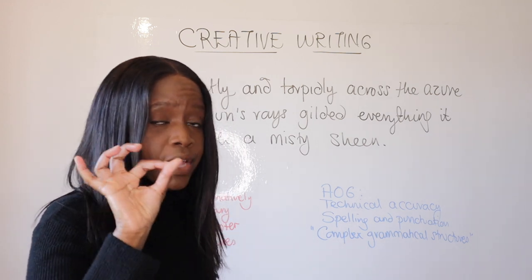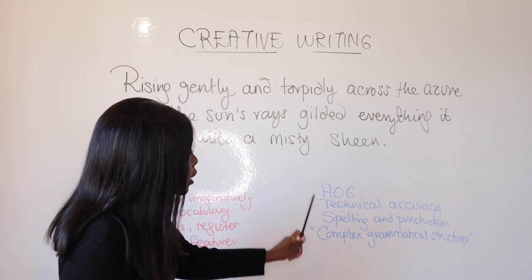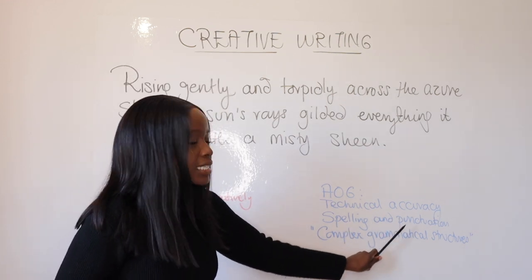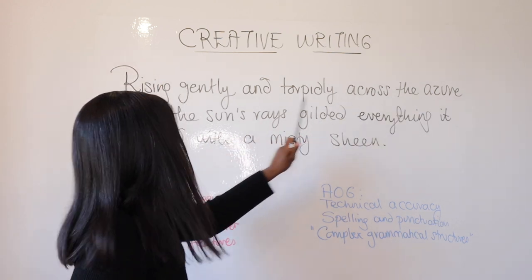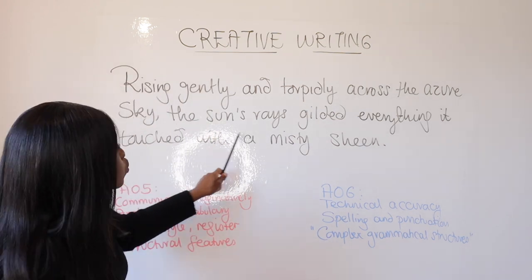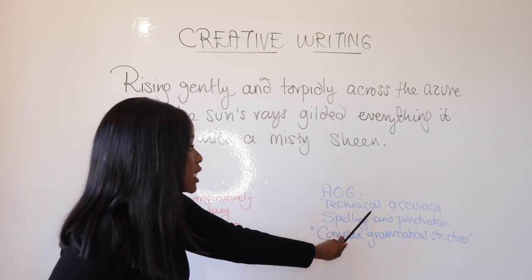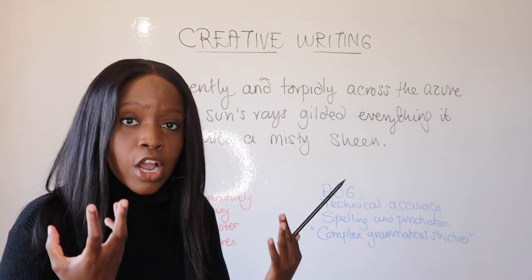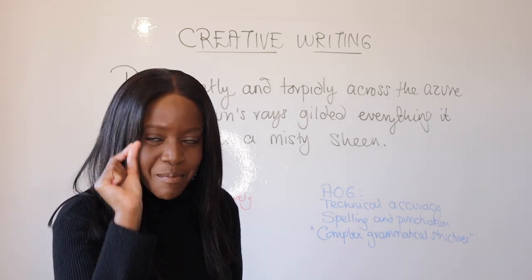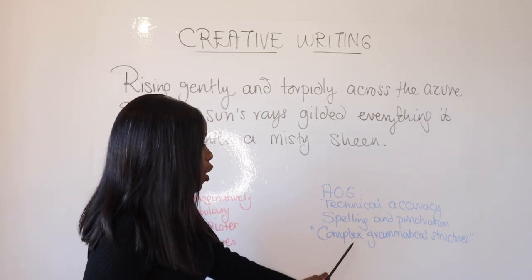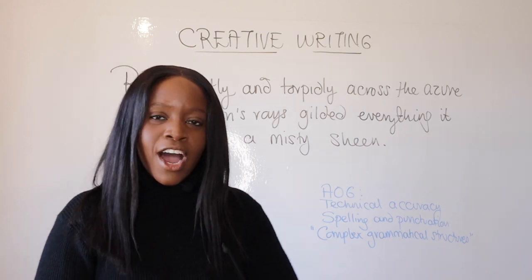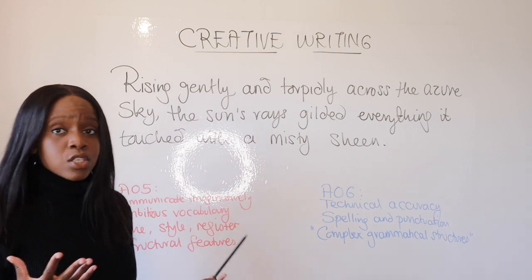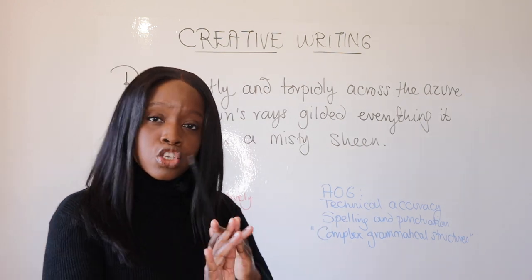Let's also talk about AO6 — it's still important to hit those marks even though it's worth 20%. AO6 tests your technical accuracy: can you spell and punctuate correctly? In the opening sentence — "Rising gently and torpidly across the azure sky," comma, that's my first clause, "the sun's rays gilded everything it touched with a misty sheen," full stop — I've demonstrated really good technical accuracy and punctuated it nicely as a complex sentence. Mark schemes also refer to complex grammatical structures, meaning a mix of one-word sentences and complex longer sentences, and this sentence demonstrates exactly that.